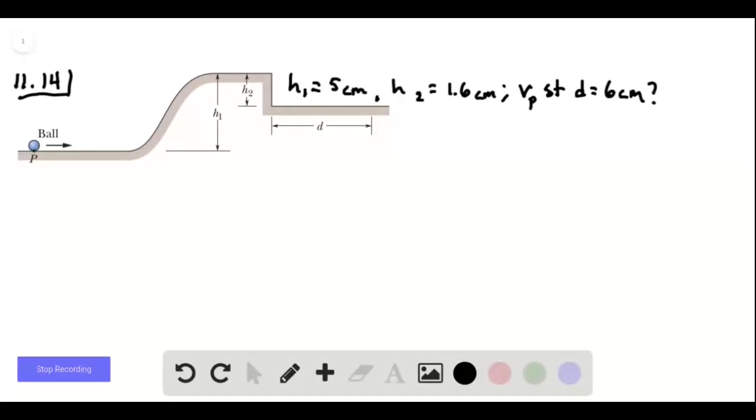So this will be a projectile type motion. And we are going to want to use conservation of energy for a rolling object to find what the speed here needs to be in terms of the speed here. So let's find the speed here first so that we don't have to come back to it.